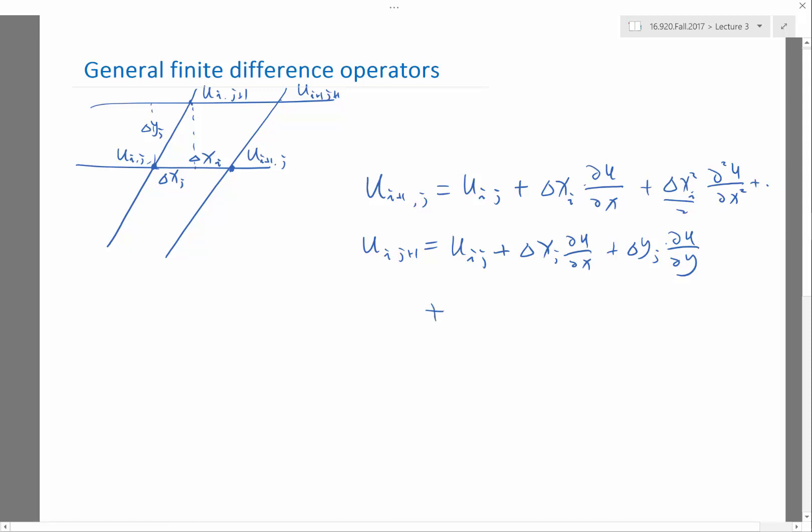And then on the second order derivative term, you have Delta X J squared over two times the second order derivative with respect to X. You also have Delta Y J squared times the second order derivative with respect to Y, but you also have the cross term Delta X J Delta Y J times the mixed derivative with respect to X Y. And then also you can keep going forever.